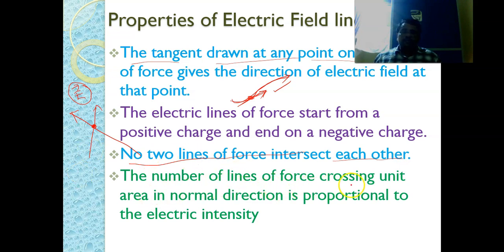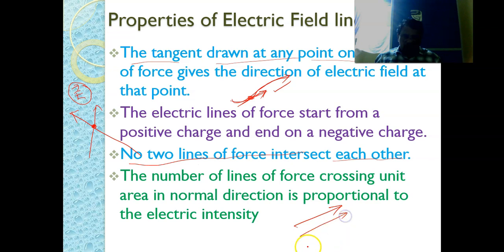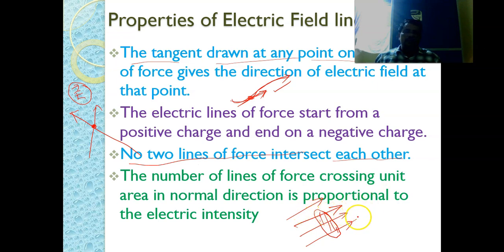Fourth: the number of lines of force crossing a unit area in the normal direction is proportional to the electric field intensity. From this we can calculate the flux, and from the flux we can calculate the electric field intensity.